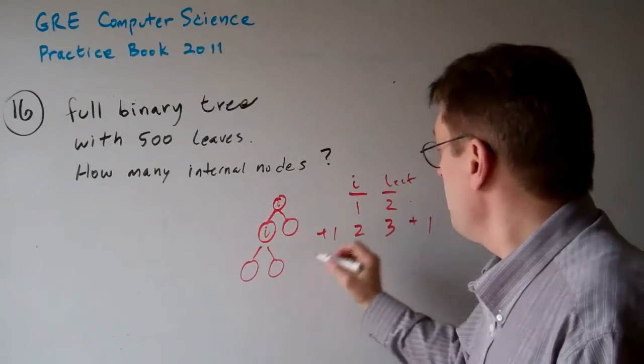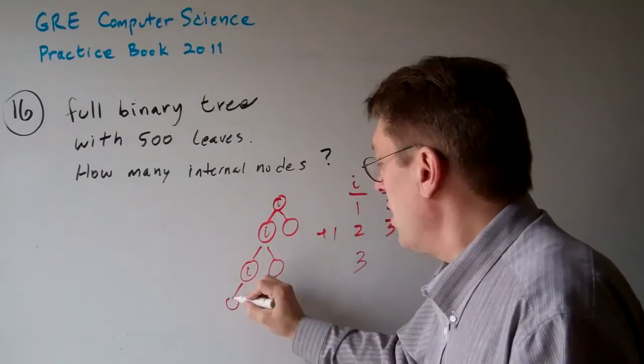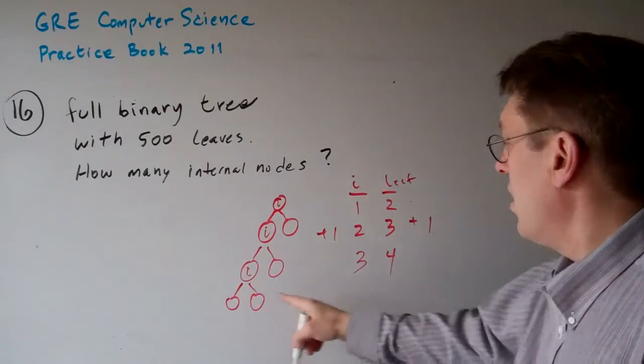So if you had three internal nodes, now we're going to have four leaves.